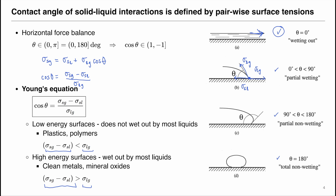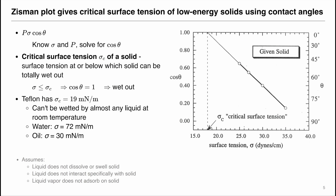Therefore, in this experiment we are mostly interested in low-energy surfaces that only partially wet, partially non-wet, or totally do not wet the solid surface. For low-energy surfaces, we can look at their critical surface tension, defined as the surface tension at or below which the solid can be totally wet out.